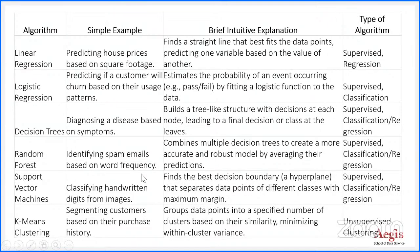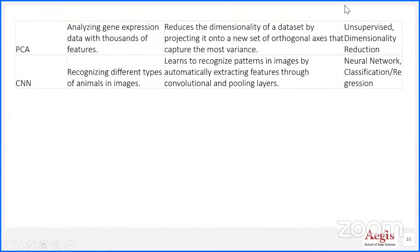SVM is used for classifying handwritten digits from images — the US Postal Department used it efficiently for identifying zip codes. K-means clustering is a wonderful algorithm for unsupervised learning. PCA is used for dimensionality reduction. CNN — convolutional neural network — is extremely good for image analysis and has become quite powerful in the last 8-10 years.